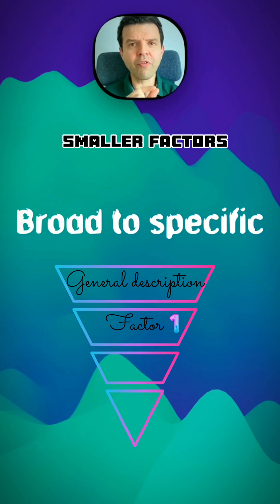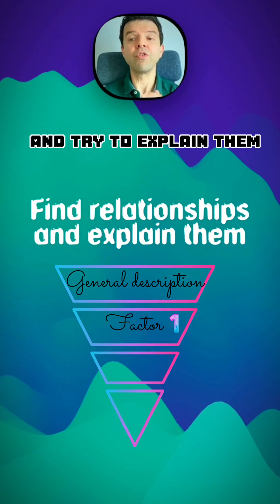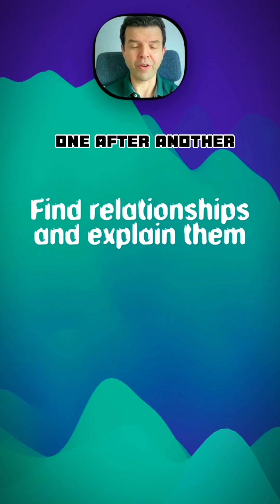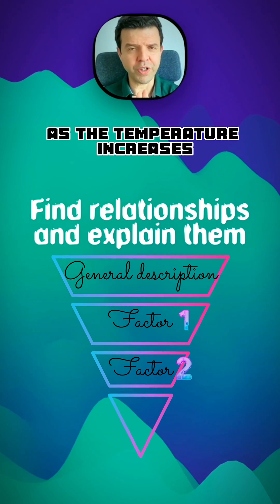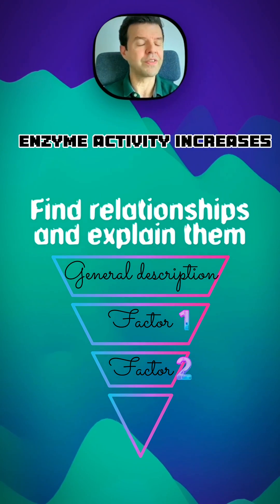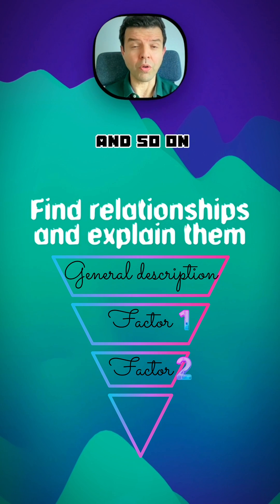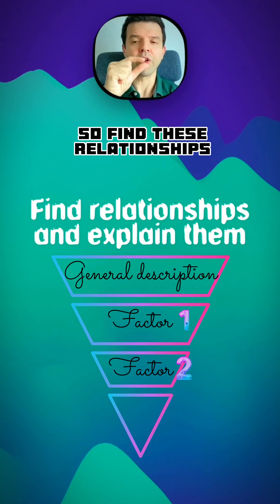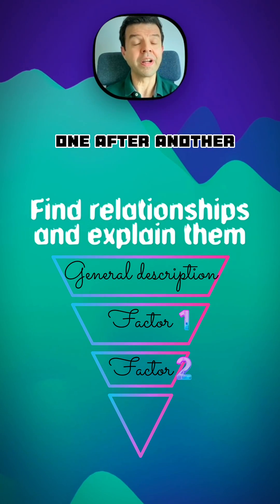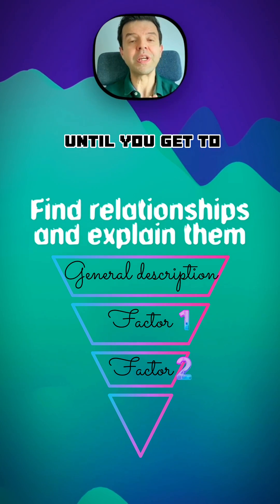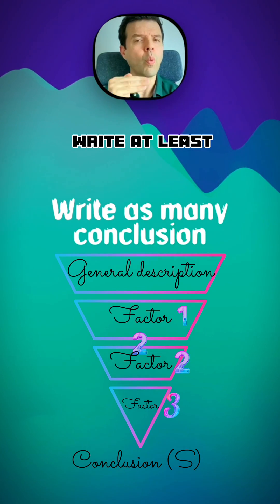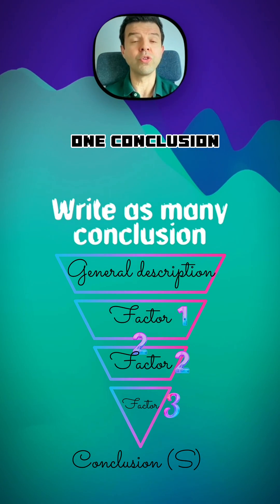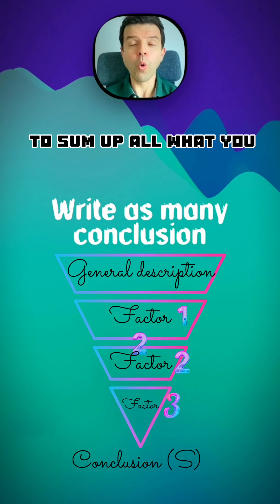Find those smaller relationships and try to explain them one after another. For instance, you can say: as temperature increases, enzyme activity increases — and so on. Find these relationships one after another until you get to the final conclusion. Write at least one conclusion to sum up everything you have written in your answer.